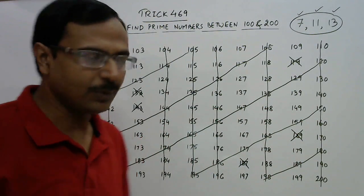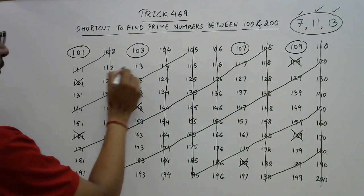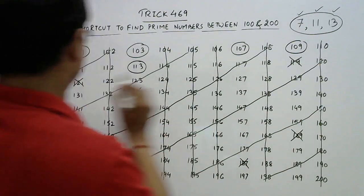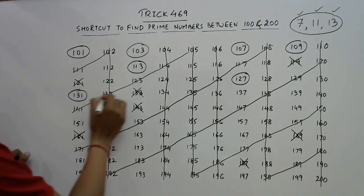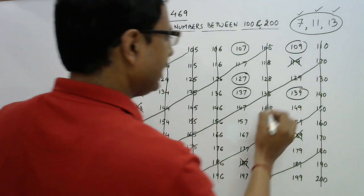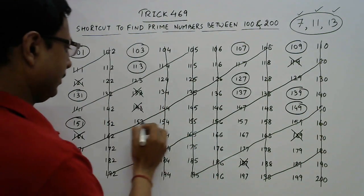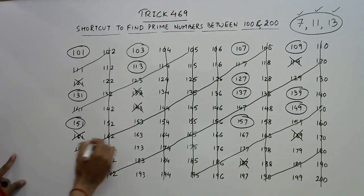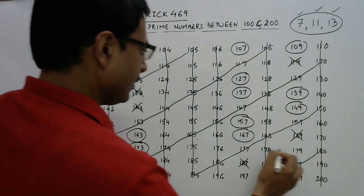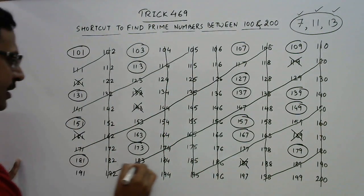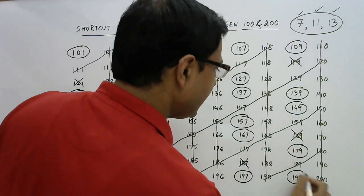Let's see how many numbers are remaining now: 101, 103, 107, 109, 113, 127, 131, 137, 139, 149, 151, 157, 163, 167, 173, 179, 181, 191, 193, 197, and 199.